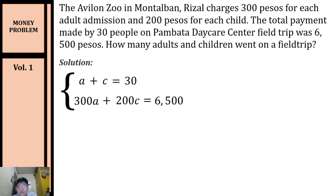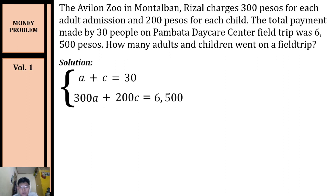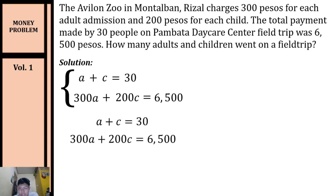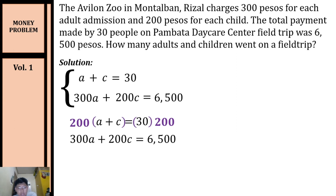Now that we have our equations, we can solve for the values of a and c using elimination method. Let's eliminate variable c. To make the coefficients of c the same, multiply the first equation by 200. This gives us: 200a + 200c = 6000.